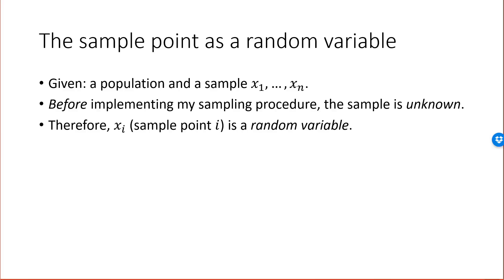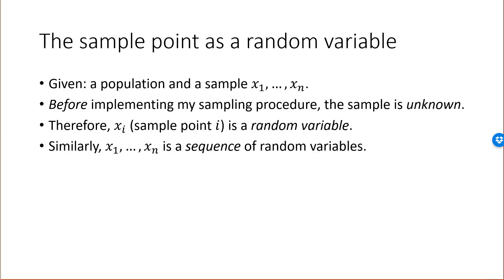We use the small letter xi to denote the actual value that we got after implementing the sampling procedure — that is, after the experiment. So thinking of sample point i as a random variable, I have a sequence of n sample points, and I can think of this sequence, this sample, as a sequence of random variables.